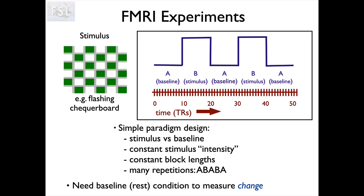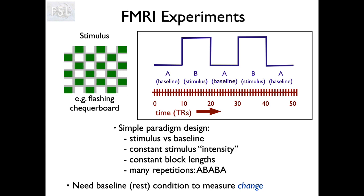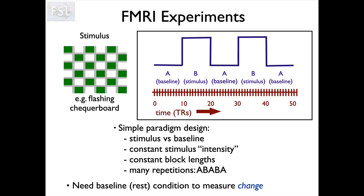In addition, we also need to repeat our stimulus over and over again in order to build up sufficient statistical power. We would often have something like the boxcar experimental design you can see here in the top right, where we repeat A, B, A, B. That's only one kind of design — there are lots of other kinds we can have. This is one of the most statistically powerful designs if those blocks are somewhere between 10 and 30 seconds long, giving us a lot of signal to work with. However, it's not always ideal, and quite often we would change that design in order to make it more psychologically interesting or relevant for the subject. There is a lot of flexibility in the kinds of designs we can have.